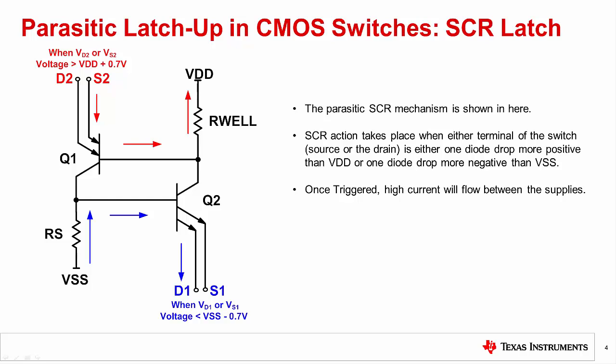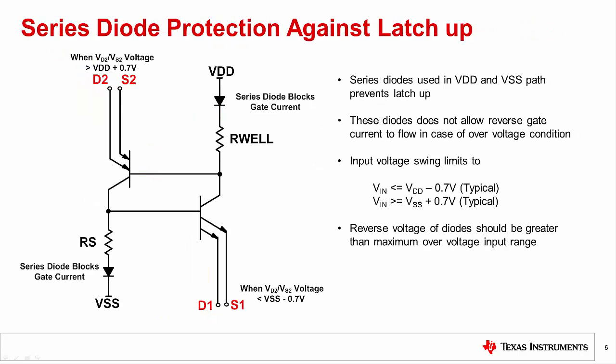Latch-up can be avoided by a simple technique. A series diode in the VDD and VSS path blocks the gate current of the thyristor and prevents the latch-up condition. During an event that would normally trigger the SCR, the diodes are reverse biased, so they prevent latch-up. During normal multiplexer operation, the diodes are forward biased, so the supply is effectively reduced by a diode drop. Using series diodes on the supply is a simple and effective method to protect against latch-up.